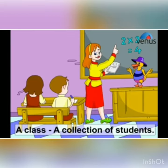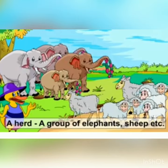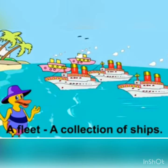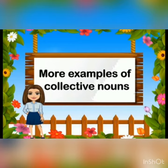A class is a collection of students. A herd is a group of elephants, sheep, etc. A library is a collection of books. A fleet is a collection of ships.